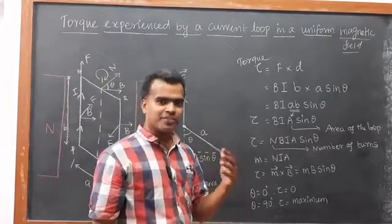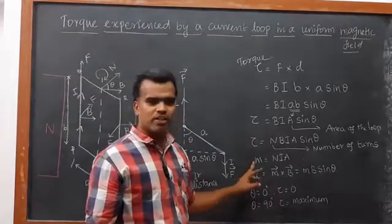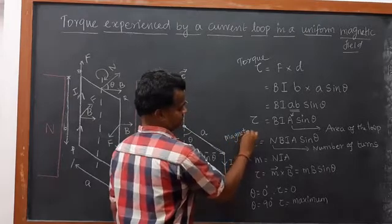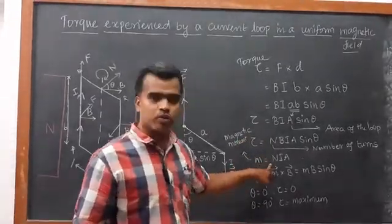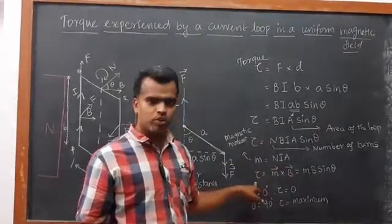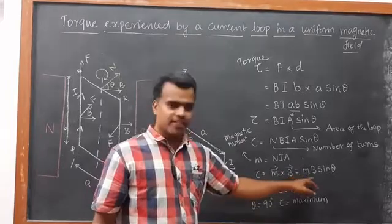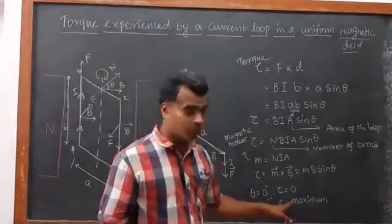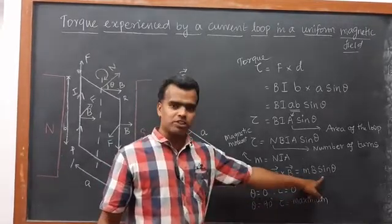To remember the formula, think of 'NBA' — like basketball — so N, B, A in the equation. Here m (small m) is the magnetic moment. The magnetic moment m = N × I × A (number of turns × current × area of the loop). Therefore we can write τ = m × B, or as vectors: τ = m⃗ × B⃗ = mB sinθ.